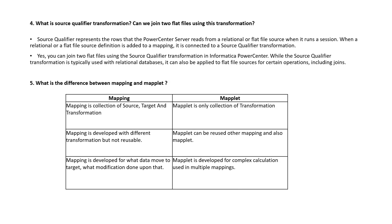The next question is: what is the Source Qualifier transformation, and can we join two flat files using it? The Source Qualifier represents the rows that PowerCenter reads from relational or flat file sources when it runs a session. When a relational or flat file source definition is added to the mapping, it is connected to the Source Qualifier. Essentially, the Source Qualifier reads data from the source — it is an active and connected transformation whose main objective is to convert the source data type into a data type supported by Informatica.